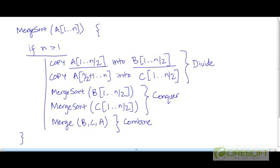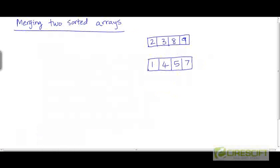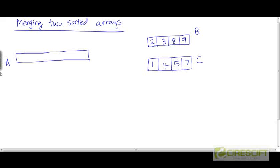Now let's try to see how exactly we are going to do this merge operation. Suppose you are given these two sorted arrays and you need to merge them to create a larger array called A. So how do you create this array A given these two sorted arrays B and C?